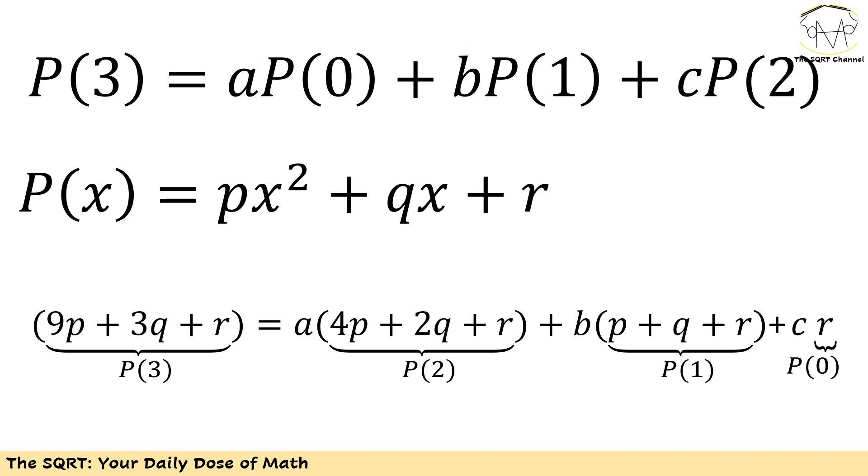To solve this, I'm going to assume that I have P(x) = px² + qx + r for the polynomial. Remember, P(x) was a quadratic polynomial with degree at most 2, so I'm going to use the expression that you see here.